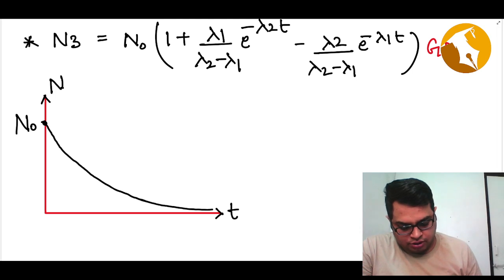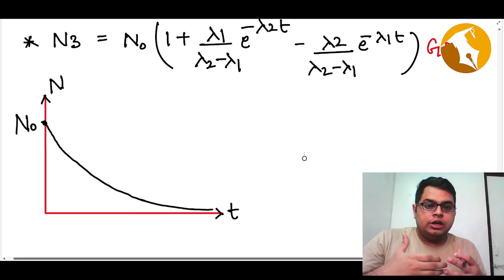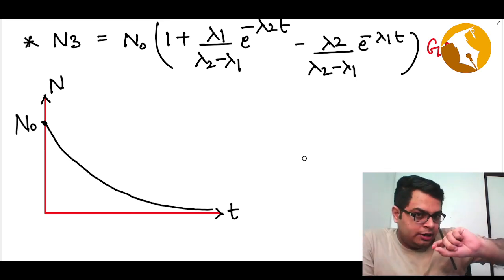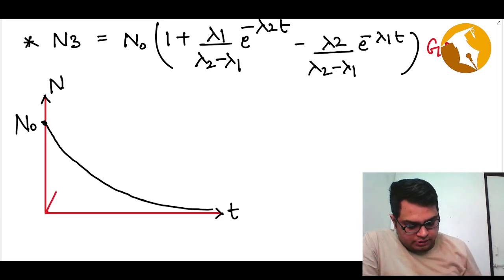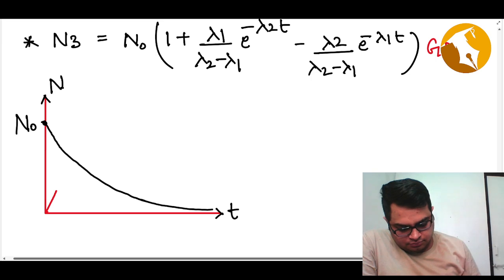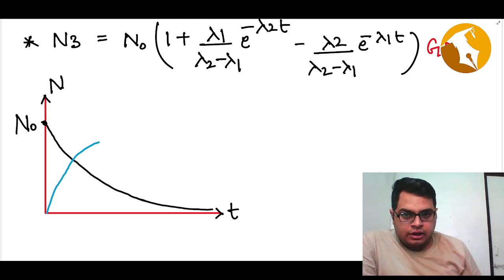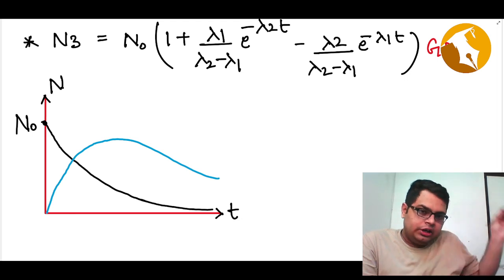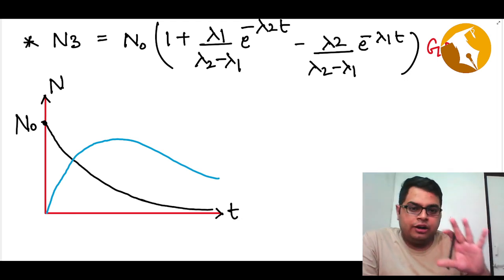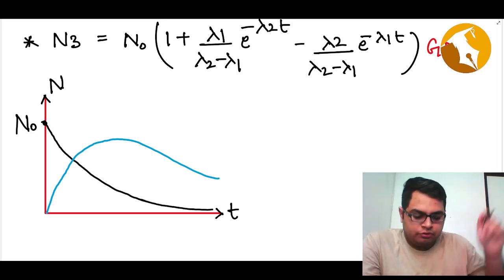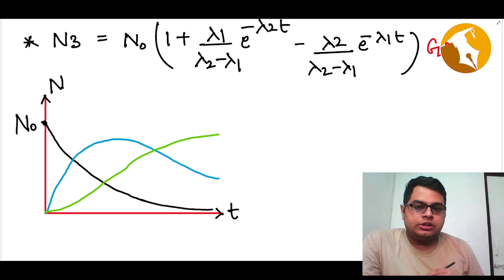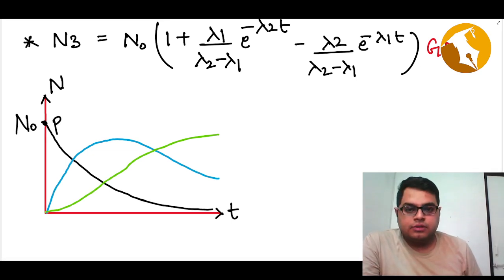The graph for daughter nuclei is not as simple. Initially, when the parent starts to decay, you start getting a daughter. Then the daughter also starts to decay into granddaughter. So in between you get a maximum, then it decreases. The daughter nuclei graph increases first and then reduces. For the granddaughter, it is just increasing — granddaughter is not disintegrating, so its concentration keeps on increasing. So: parent decreases, daughter rises then falls, granddaughter keeps rising.